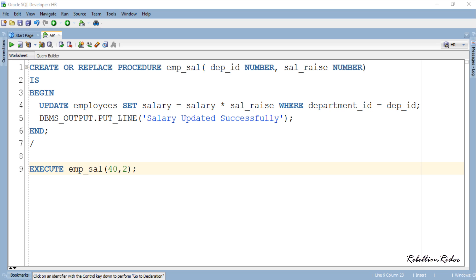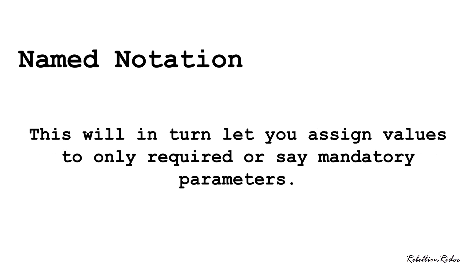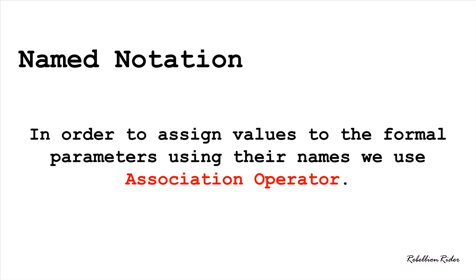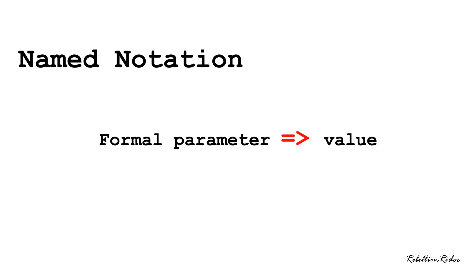So what is Named calling notation? Named calling notation lets you pass values to the formal parameters using their name. This will in turn let you assign values to only the required or mandatory parameters. In order to assign values to the formal parameters using their names, we use the association operator — it is a combination of the equal-to sign and greater-than sign. We write the name of the formal parameter to the left-hand side of the operator and the value to the right-hand side.